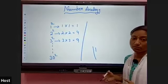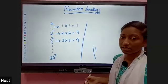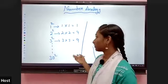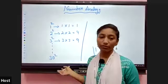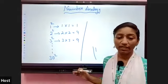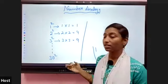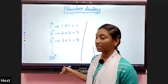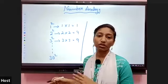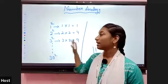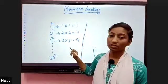1 squared is 1, 2 squared is 4, 3 squared is 9, 4 squared is 16. Up to 30 squares you should completely learn these.